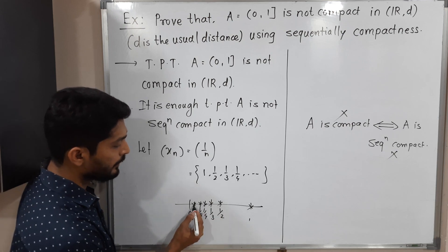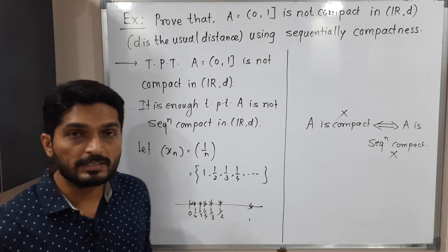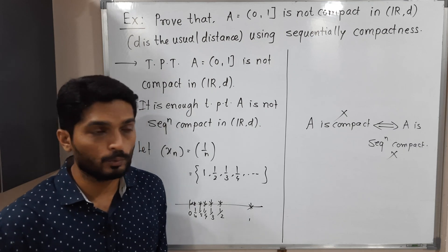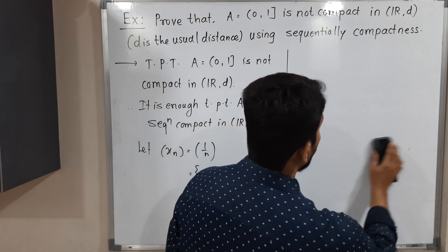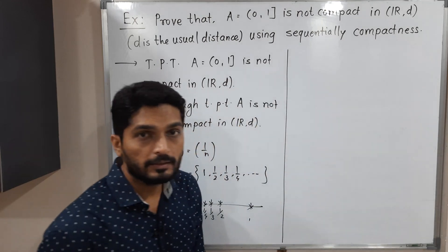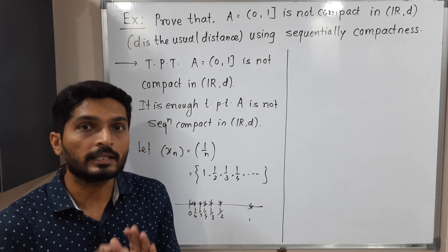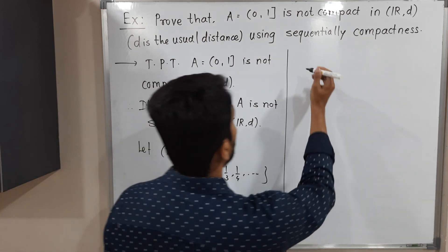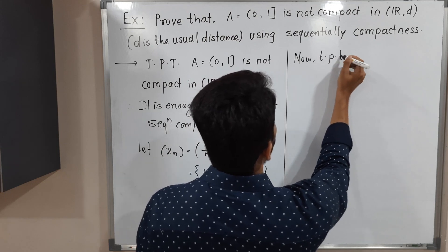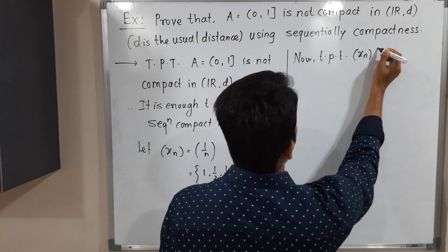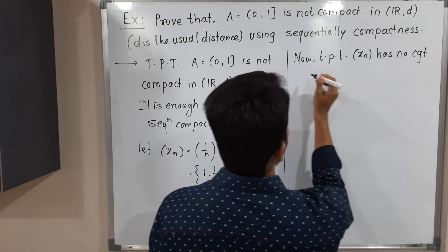All terms of this sequence are gathering around 0, which means this sequence is convergent and converges to 0. Now we have to prove that Xₙ has no convergent subsequence in A.